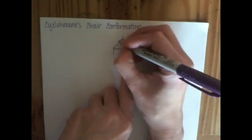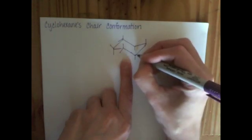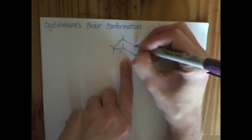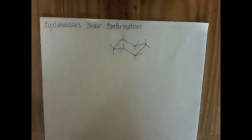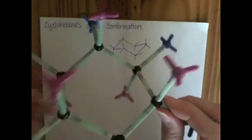And then alternating angled down, angled up, angled down, angled up, angled down, angled up. That's the way that we represent this particular connectivity. Now, let me change some of these substituents to show you something else.